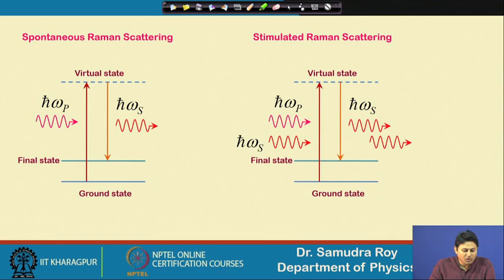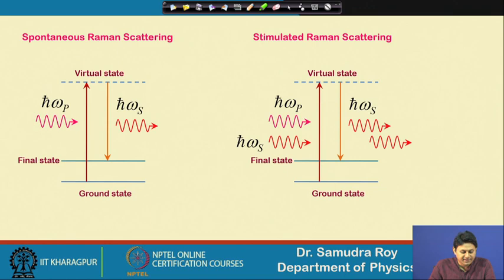In the spontaneous process, the molecule is excited by some external photon having energy h-cross omega_p, then goes back to some final state or to some higher energy state. As a result we get some photon emitted from the medium having a frequency less than that of the launched frequency. This is the Stokes process.